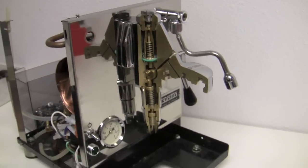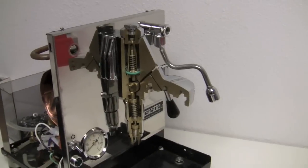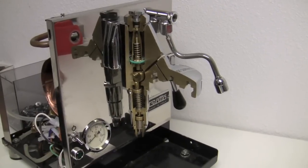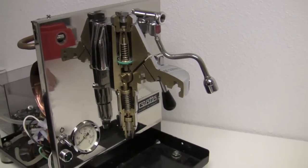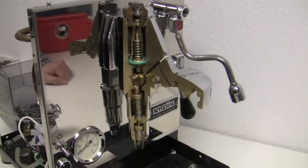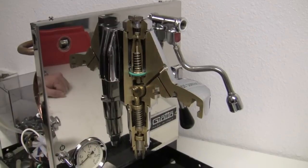And so this is a Rocket E61 that we used as the example, but this technology is just the E61 technology, regardless of manufacturer? For the most part, there's little differences in some of them, but if somebody says they're using the E61 group head, it's typically this set up right here.